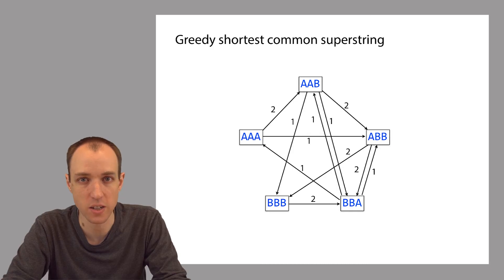Let's see this principle in action. Here we have an overlap graph, and to apply our principle, we must first locate the edge that corresponds to the longest overlap. In this case, there's a tie because there are actually several edges that all have an overlap length of two, which is the maximal overlap length. When this happens, we just pick one of the edges at random. Let's say that we pick this edge here, highlighted in red.